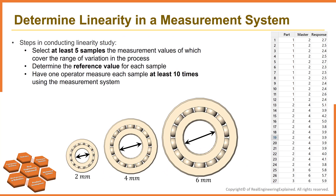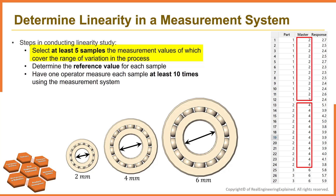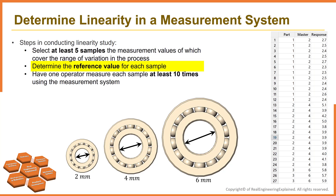The procedure for conducting a study to determine if there is linearity in a measurement system is given here. It is important that the measurement system be stable and in statistical control when the linearity study is done. Select at least 5 samples which cover the range of variation in the process — for example, 2 mm, 4 mm, 6, 8, and 10 mm. Then determine the reference value for each sample and designate it as a golden sample.